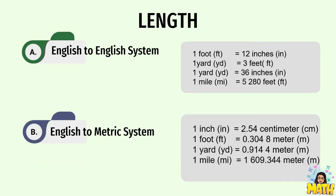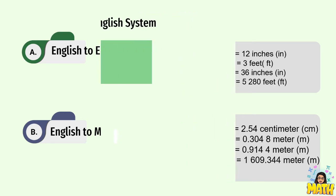We also have this kind of conversion. If we have inches, feet, yard, and miles converted to metric units like centimeters and meters, that is called English to metric system. Wherein 1 inch equals 2.54 centimeters, 1 foot equals 0.3048 meter, 1 yard equals 0.9144 meter, and 1 mile equals 1,609.344 meters.